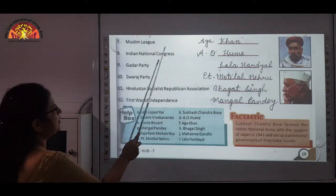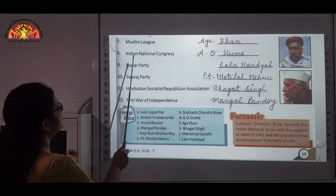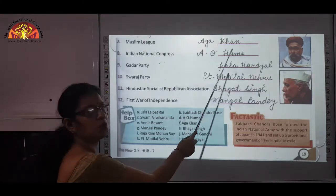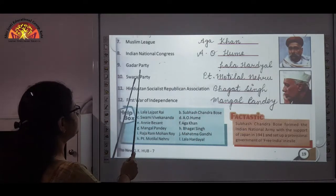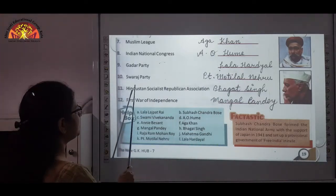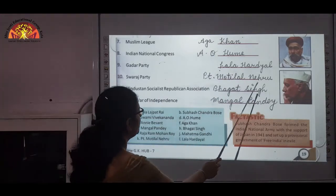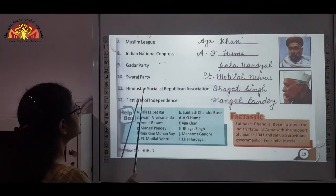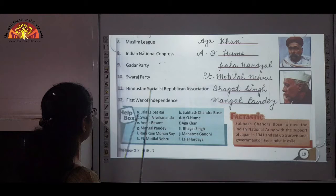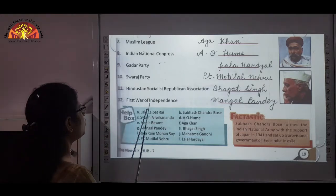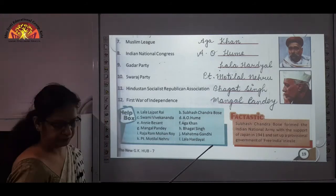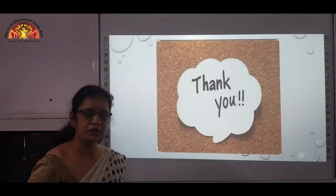Number 7: Muslim League — Aga Khan. Indian National Congress was formed in 1885 by A.O. Hume. Gadar Party — Lala Hardyal. Swaraj Party — Pandit Motilal Nehru. Number 11: Hindustan Socialist Republican Association — Bhagat Singh. Number 12: First War of Independence — Mangal Pandey. So fill it in carefully. Thank you.